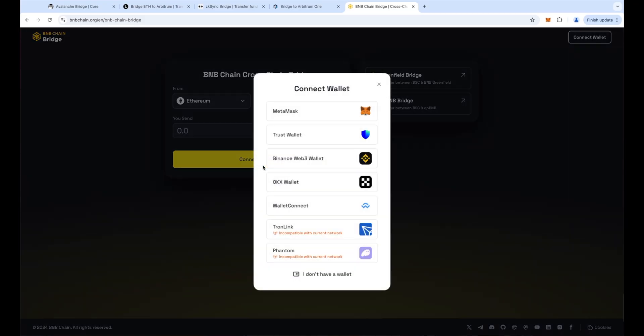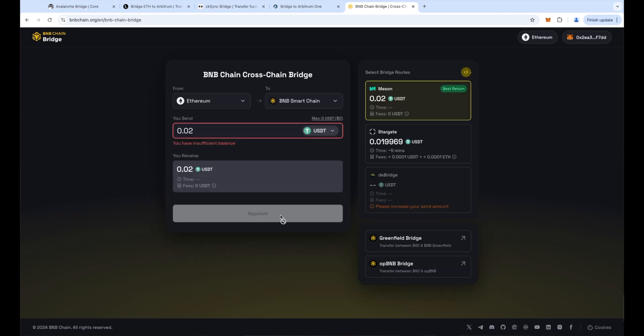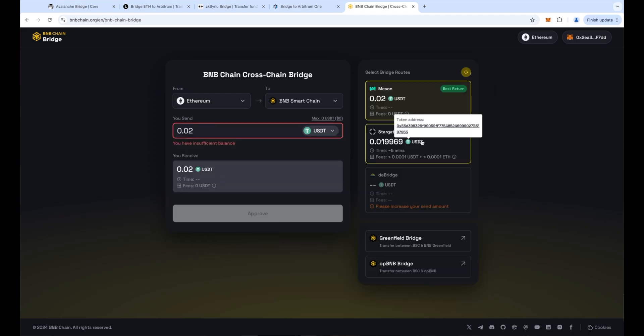Now let's talk about how bridges are managed — they can be either centralised or decentralised. Often when people are bridging their funds cross-chain, they use a centralised bridge. They'll connect their wallet, hit swap, and then pray that the money shows up on the other side. Centralised bridges are run by a single entity, which means you need to trust them to manage your assets responsibly. It's like sending your assets to someone and saying please send me the same amount of tokens on the destination chain, then waiting nervously hoping they turn up.